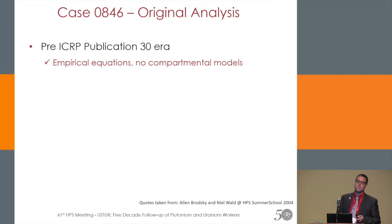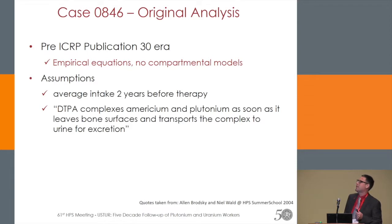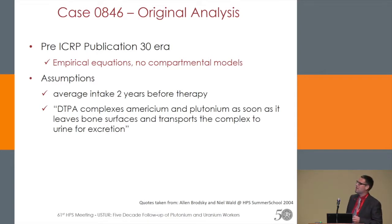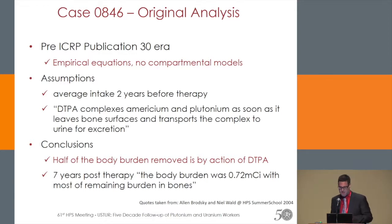The original analysis was pre-ICRP Publication 30 era, so there were no compartmental models — just empirical equations like the Langham equations used for assessment. The assumption was an average intake two years before therapy, assumed as chronic intake over the whole three-year period. The assumption was that DTPA complexes americium and plutonium as soon as it leaves bone surfaces and transports the complex to urine for excretion. The conclusions cited were that half of the body burden was removed by the action of DTPA, and seven years post-therapy the body burden was 0.7 millicuries with most of the remaining burden in bones.